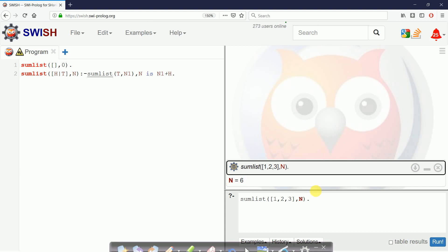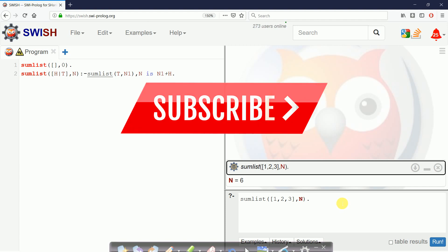This is the way to add all elements present in a list using Prolog. I hope you understand how to add elements in a list using Prolog. If you have any queries, feel free to comment below. I will try to help you as soon as possible. If you like this video, please hit the like button and subscribe to our channel to watch more videos. See you in our next video. Thank you.